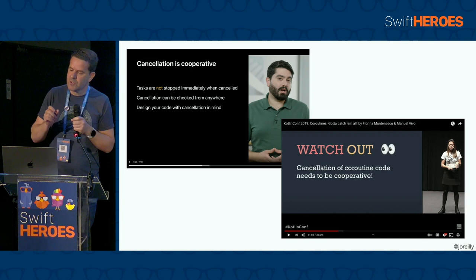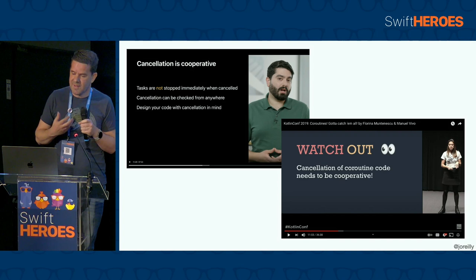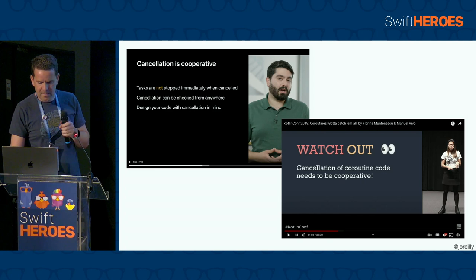To finish off this section, I wanted to show one other example of how we're now talking about the same concepts on both platforms, using in many cases the same vocabulary. I had watched a session at KotlinConf 2019 where they talked about how cancellation of coroutines needed to be cooperative. It was interesting then to see the structural concurrency talk at WWDC 2021 talking about the same concept — cancelling tasks in the Swift case.